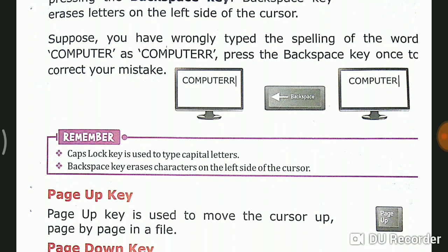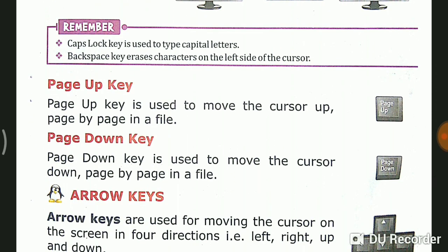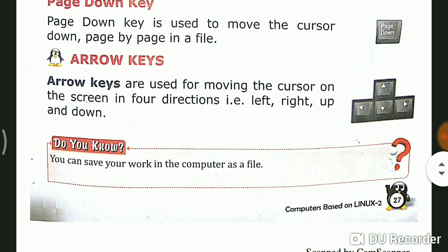Now, something to remember. Caps lock key is used to type capital letters. Backspace key erases characters on the left side of the cursor. Page up key is used to move the cursor up page by page in a file. Page down key is used to move the cursor down page by page in a file. Arrow keys are used for moving the cursor on the screen in four directions: left, right, up, and down. You can save your file in the computer as a file.